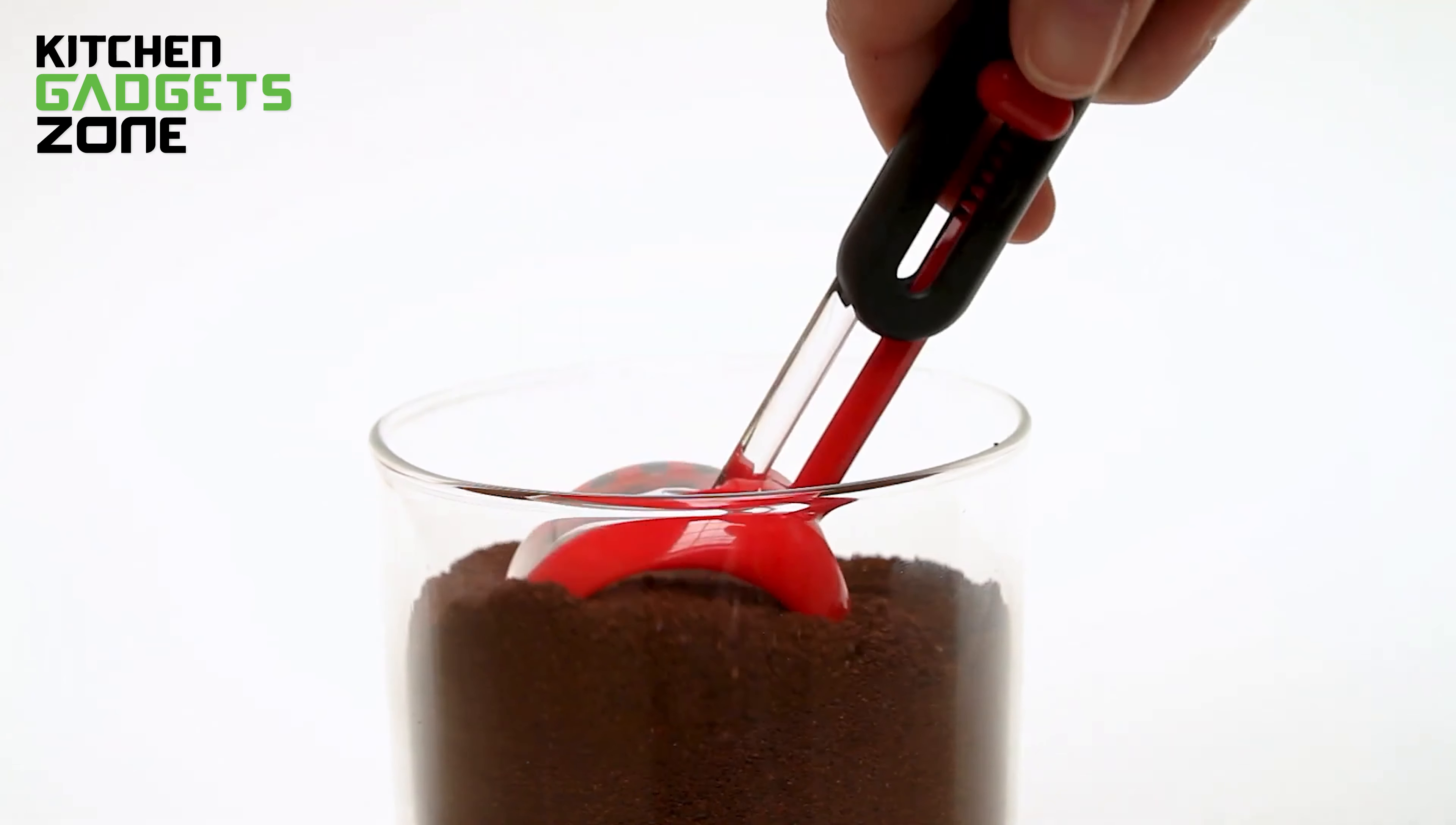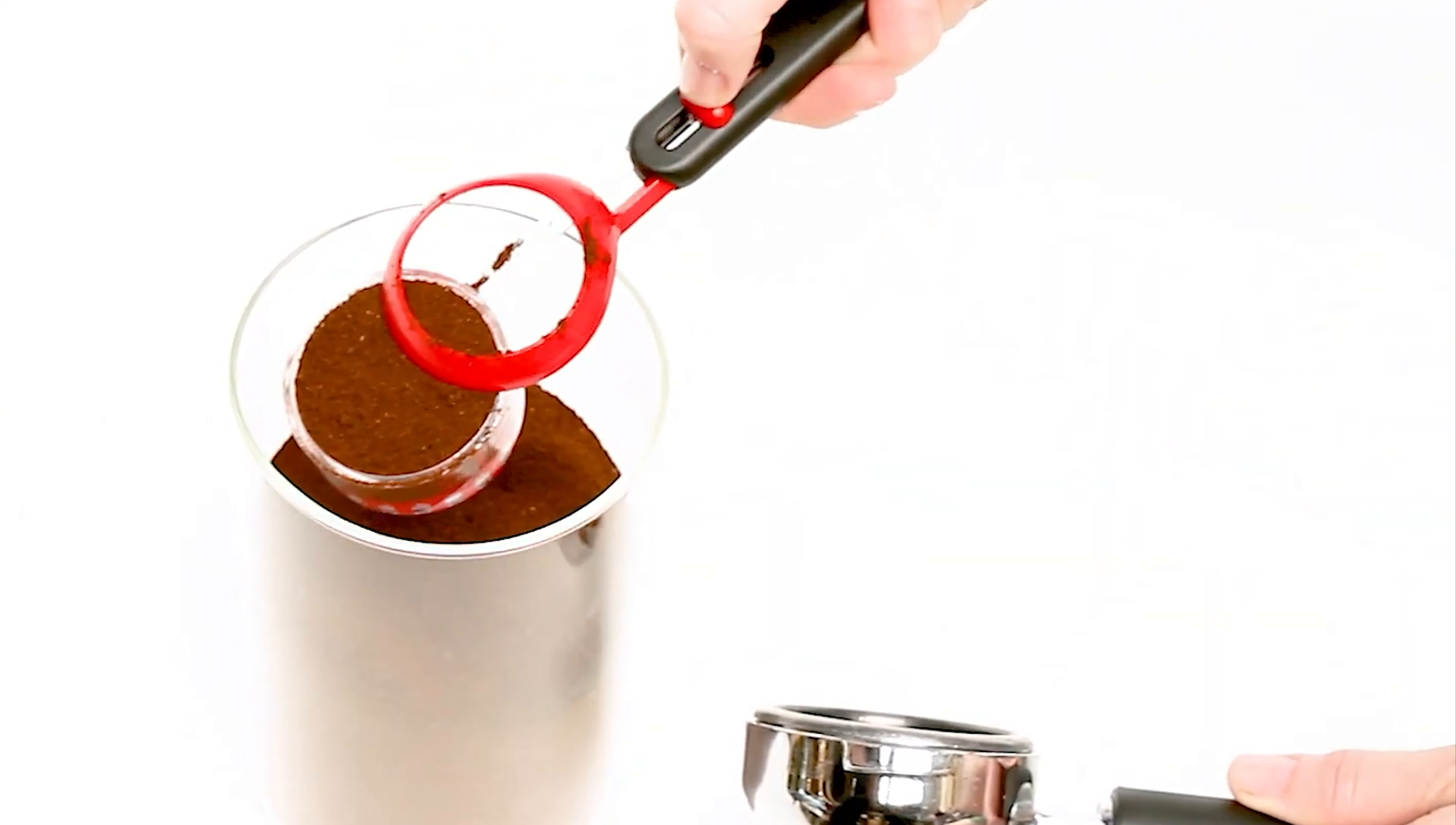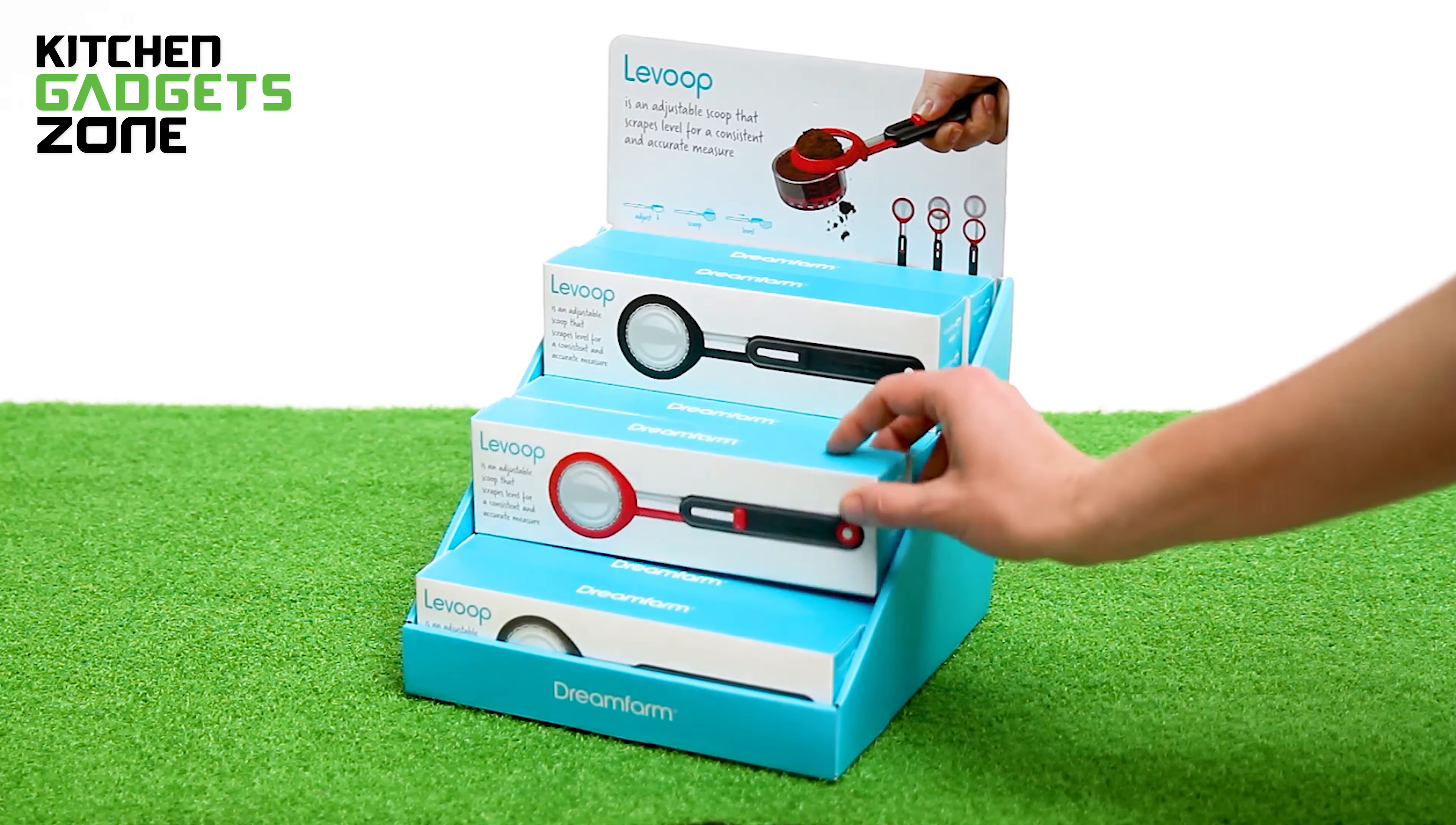The scraper ring is shaped like a funnel, making it easy to transfer your powder right where you want it. With LeVoop, you'll never have to worry about ruining your recipes or wasting precious ingredients again. Kitchen convenience has never been so simple.